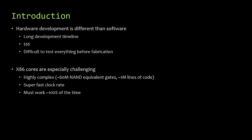X86 CPUs are especially challenging, in part because of the complexity. A modern high-performance chip can easily be around 60 million NAND gates, and the RTL code — typically written in a language like Verilog or VHDL — can easily reach a million lines.